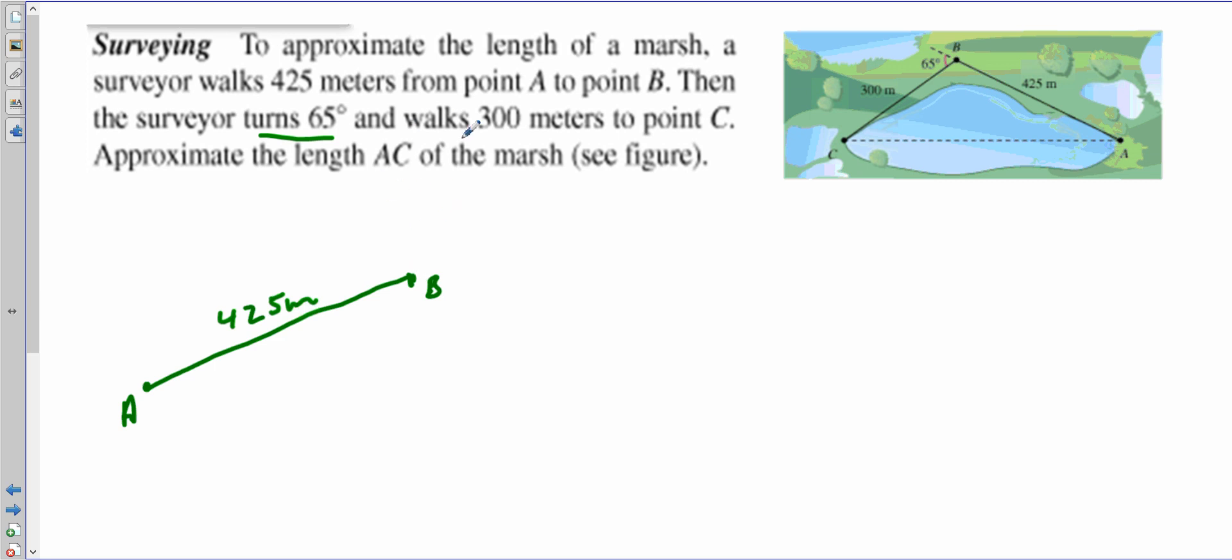...and walk 300 meters to point C. We don't really know where the marsh is. Essentially he's walking and then turning 65 degrees. It could be in either direction, doesn't really say, so I'll just say I'm going down from here, 65 degrees.